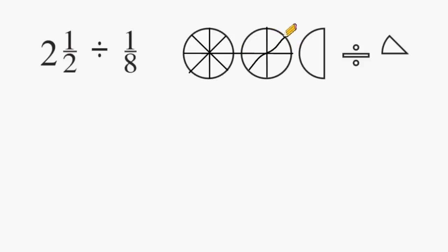And you can see for each circle we have 8 eighths. So now we have 16 eighths, and we have to divide this half into eighths, and we can only get 4 eighths out of this half.